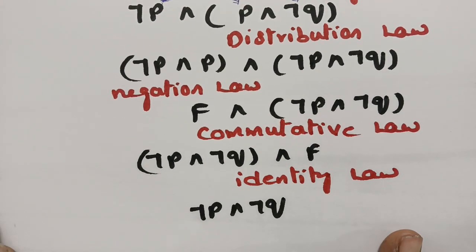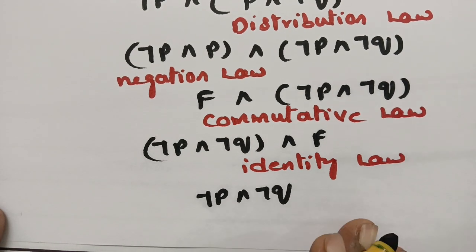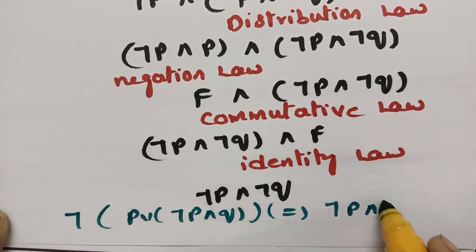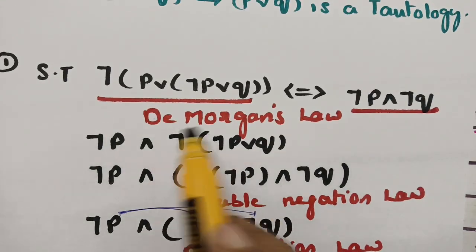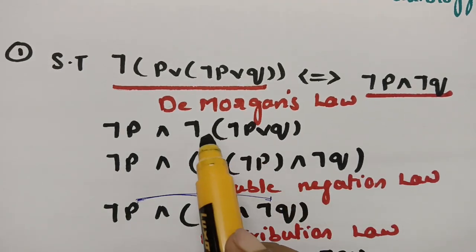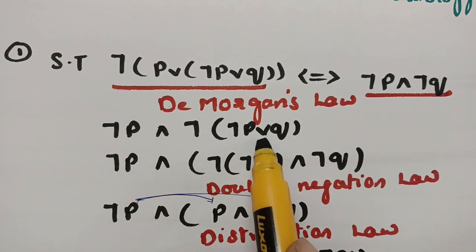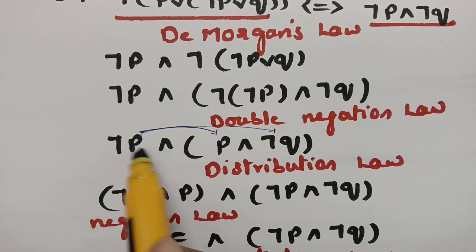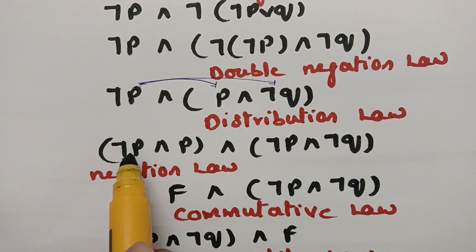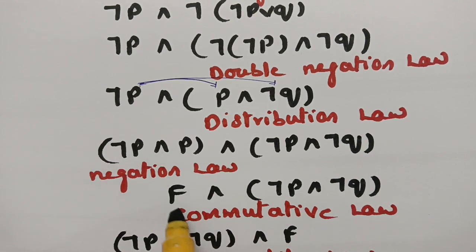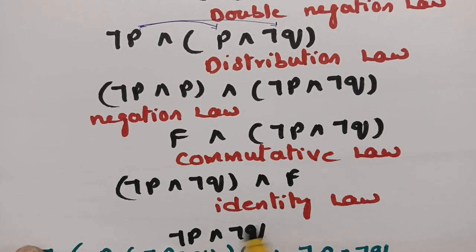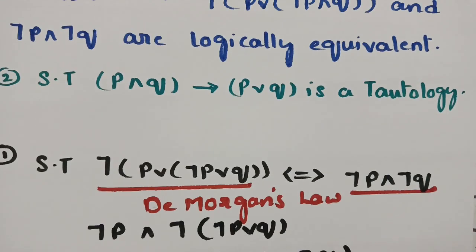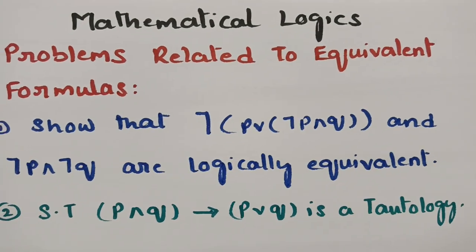Therefore, negation of (P or (negation P and Q)) equals negation P and negation Q. Using De Morgan's law, I sent the negation inside turning 'or' into 'and'. Applied De Morgan's law again turning 'or' into 'and'. Applied double negation — negative of negative is positive. Applied distributive law distributing negation P to P and Q. Used negation law — negation P and P is false. Applied commutative law and identity law to reach the final answer: negation P and negation Q.